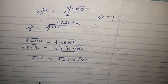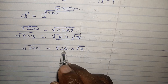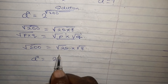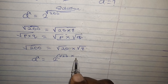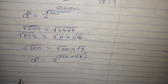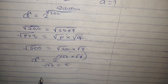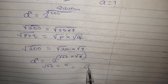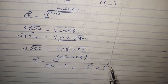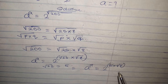So wherever we see root of 200 we substitute root of 25 times root of 8. We know root of 25 equals 5, so we now have a to the power of a equals 2 to the power of 5 times root of 8.